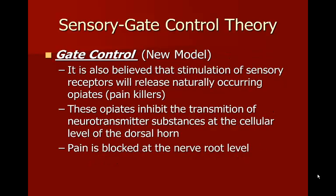There is a new model of the gate control theory. It's also believed that stimulation of sensory receptors will release naturally occurring opiates — painkillers. These opiates inhibit the transmission of neurotransmitter substances at the cellular level of the dorsal horn, and the pain is blocked at the nerve root levels. This new theory combines elements of the gate theory with other theories.